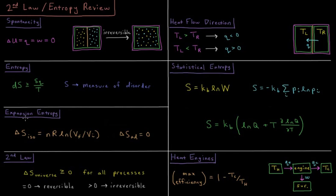During some expansion event in our system, if it occurs adiabatically, the entropy change is going to be zero. If it occurs isothermally, the entropy change is going to be Nr log V final over V initial, with an equal and opposite amount of entropy being created for the surroundings.